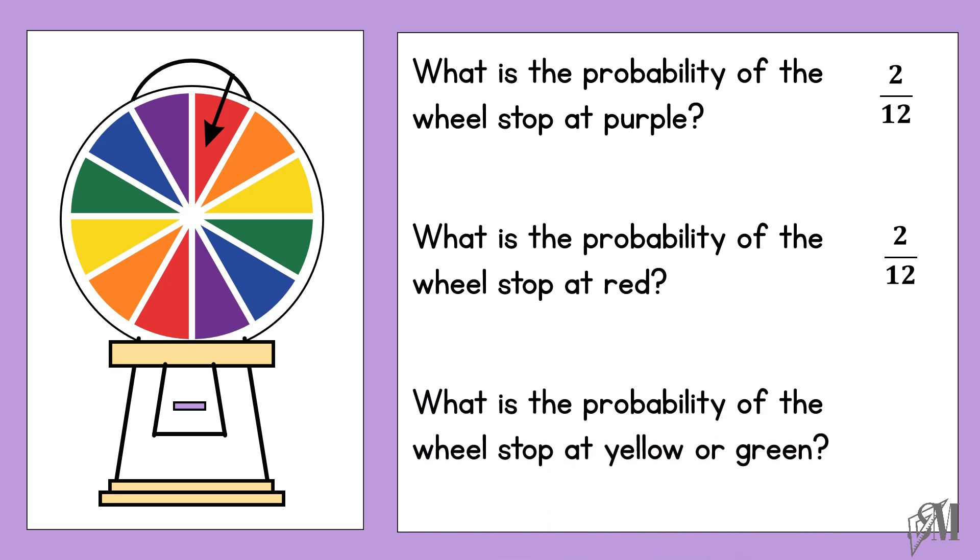The last question is what is the probability of the wheel stopping at yellow or green? Here there are 2 colors, yellow or green. We know there are 2 yellow sectors and 2 green sectors. Therefore, the probability of the wheel stopping at yellow or green will be 4 over 12.